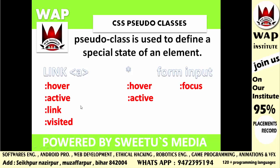ये बहुत ही advanced होते हैं और बहुत interesting होते हैं। मेनली इनका उपयोग हम link text के साथ करने वाले हैं, और ये mainly चार methods से define किये जाते हैं। आप कह सकते हो CSS pseudo-classes मुख्य रूप से चार ही हैं।